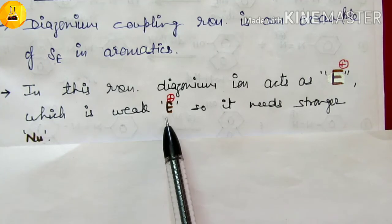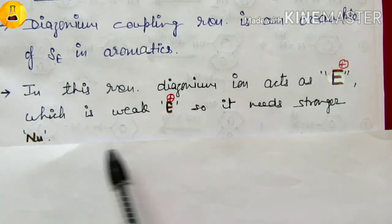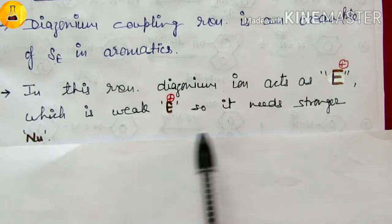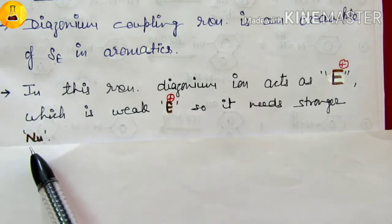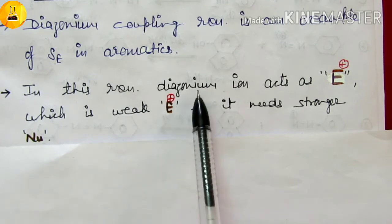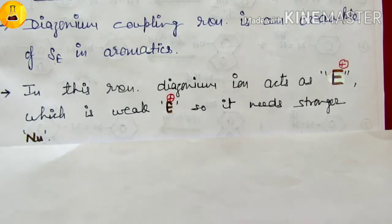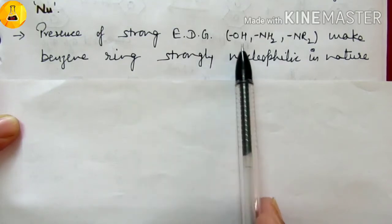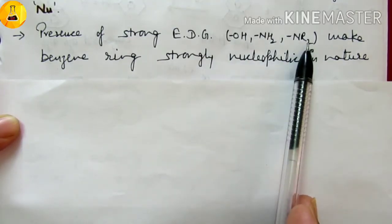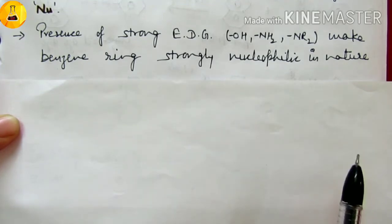In diazonium coupling, the nucleophile on the other side needs to be stronger. It needs to be a stronger nucleophile to react with this weak diazonium electrophile. If benzene has an OH group, NH2 group, or NR2 group, the electron density on benzene will increase.